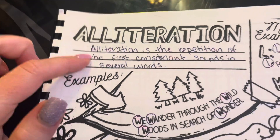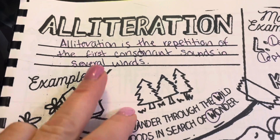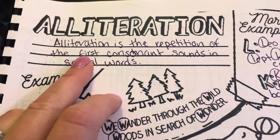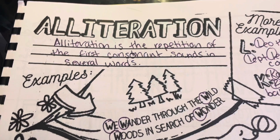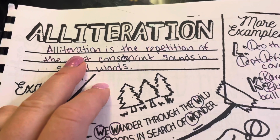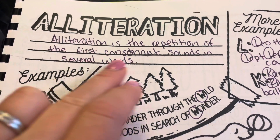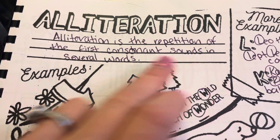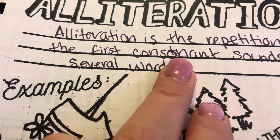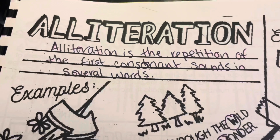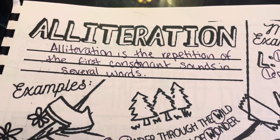So, alliteration — you can see I've already filled it out. It says alliteration is the repetition of the first consonant sounds in several words. That's spelled C-O-N-S-O-N-A-N-T. So alliteration is the repetition of the first consonant sounds in several words.